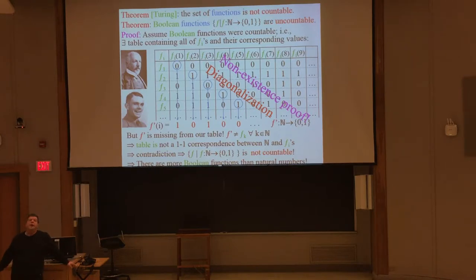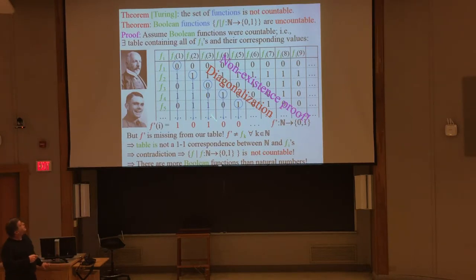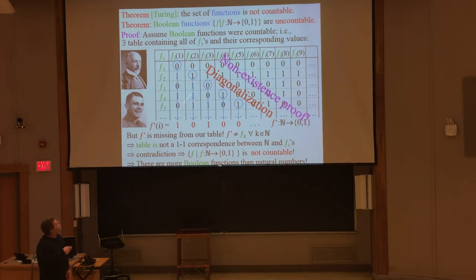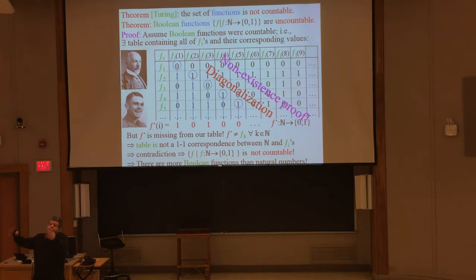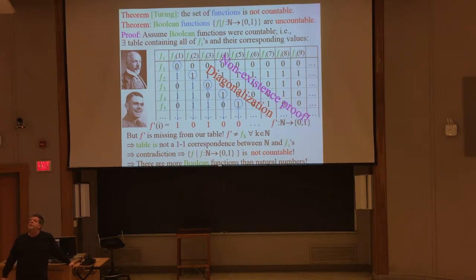So that's a nonexistence proof — those are hard to come by. This is true: you cannot enumerate the functions no matter who is doing the enumeration, no matter how omniscient and omnipotent they are. It's like saying such a being cannot find an integer between a quarter and a third — it's not a fault of the being, it's just not there to be found. That's what we're saying here.